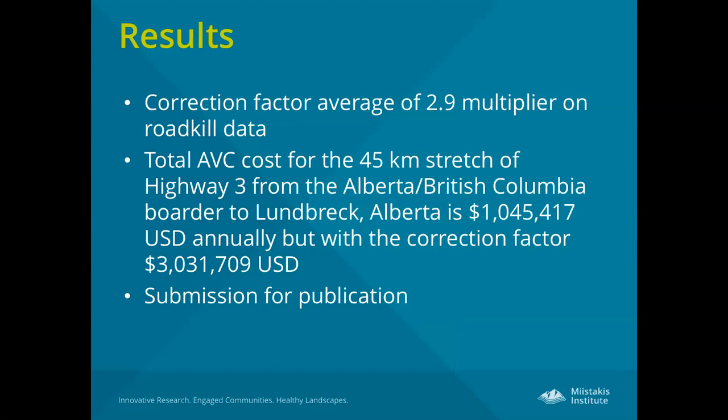The results from Collision Count have been very interesting, showing that the correction factor is a multiplier of 2.9 compared to traditionally collected roadkill data. That means the total animal-vehicle collision cost for that 45-kilometer stretch of highway from the Alberta-BC border to Lundbrook, Alberta is over one million dollars US annually — but with the correction factor applied, that goes up to over $3 million. This shows the true cost to society of these animal-vehicle collisions. We're currently writing up these results for submission, and we feel this correction factor is a valuable contribution to road ecology.